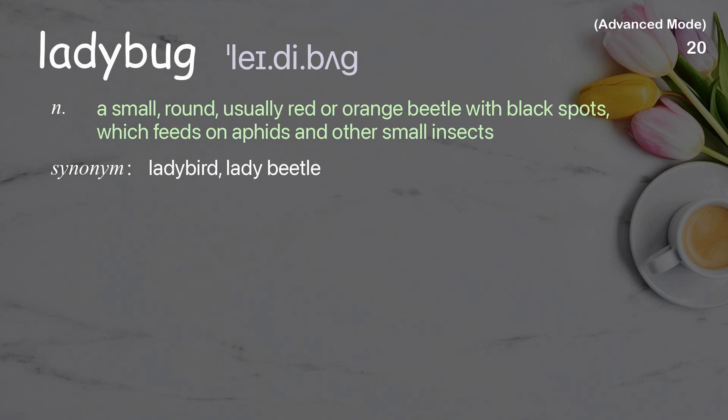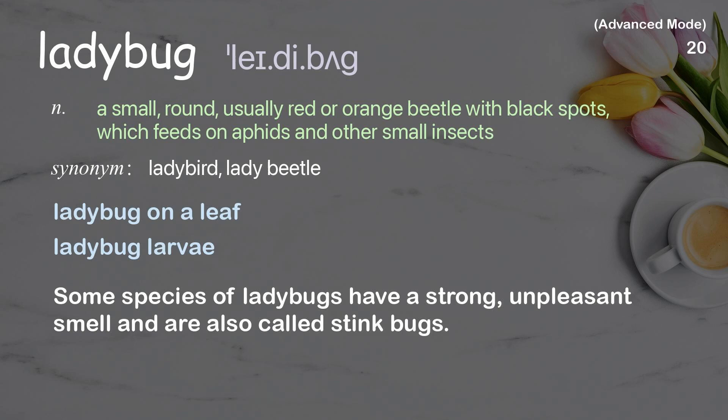Ladybug. A small, round, usually red or orange beetle with black spots, which feeds on aphids and other small insects. Examples: ladybug on a leaf, ladybug larvae. Some species of ladybugs have a strong, unpleasant smell and are also called stink bugs.